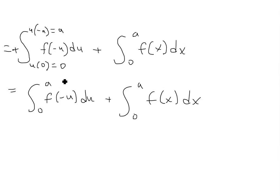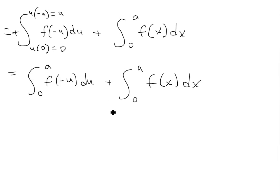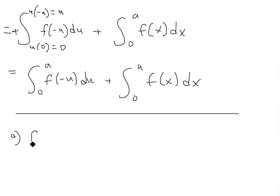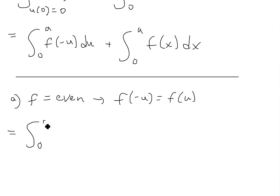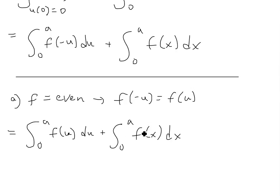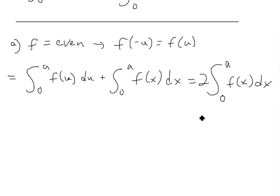Now we look at the two cases. If f is even, then f(negative u) equals f(u). So the expression becomes the integral from zero to a of f(u) du plus the integral from zero to a of f(x) dx. These are the exact same function — just different variable names, which don't matter. So this equals two times the integral from zero to a of f(x) dx. That completes the proof of the first part of the theorem.